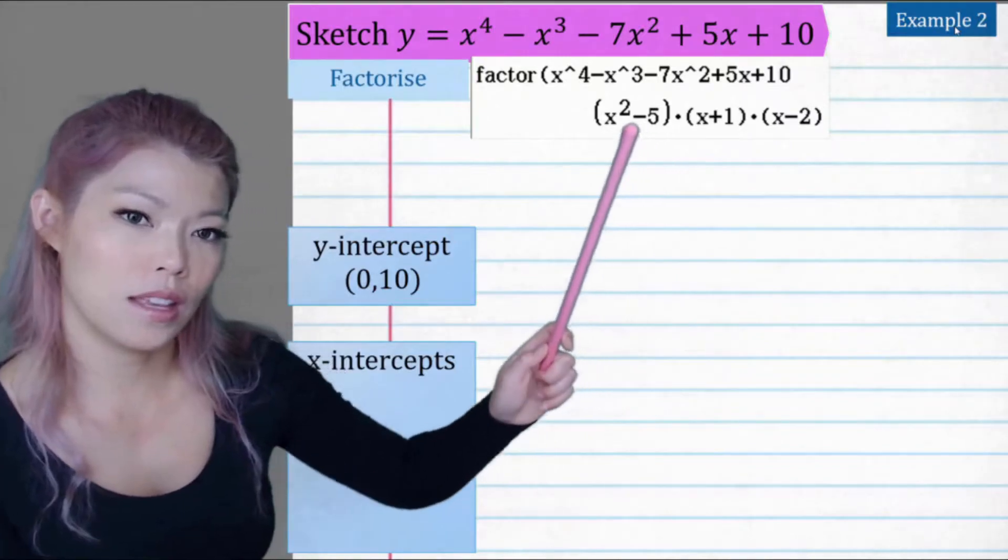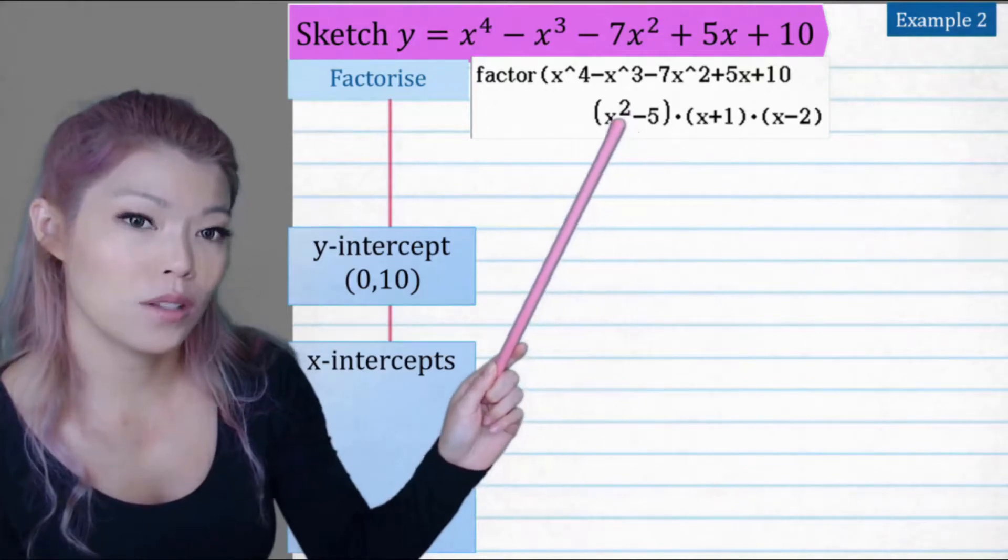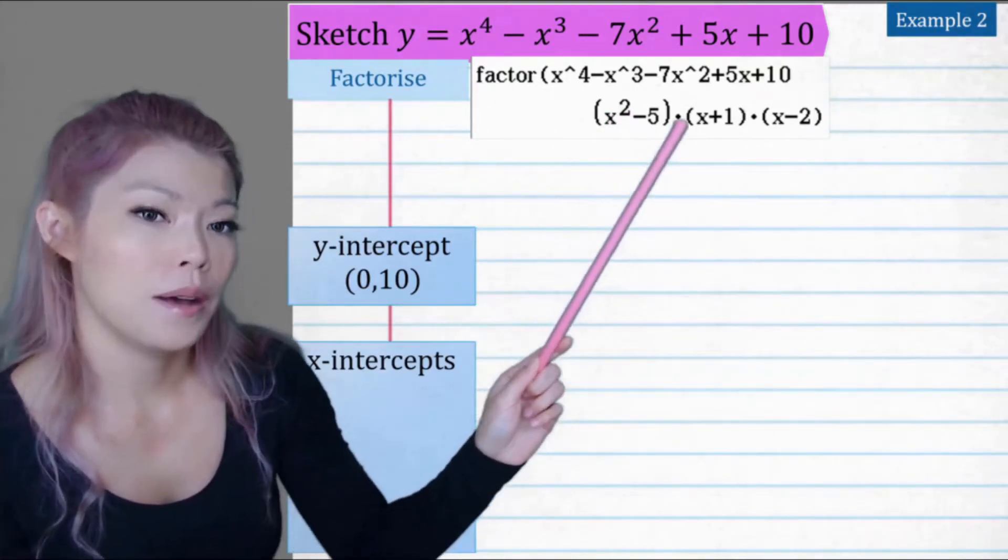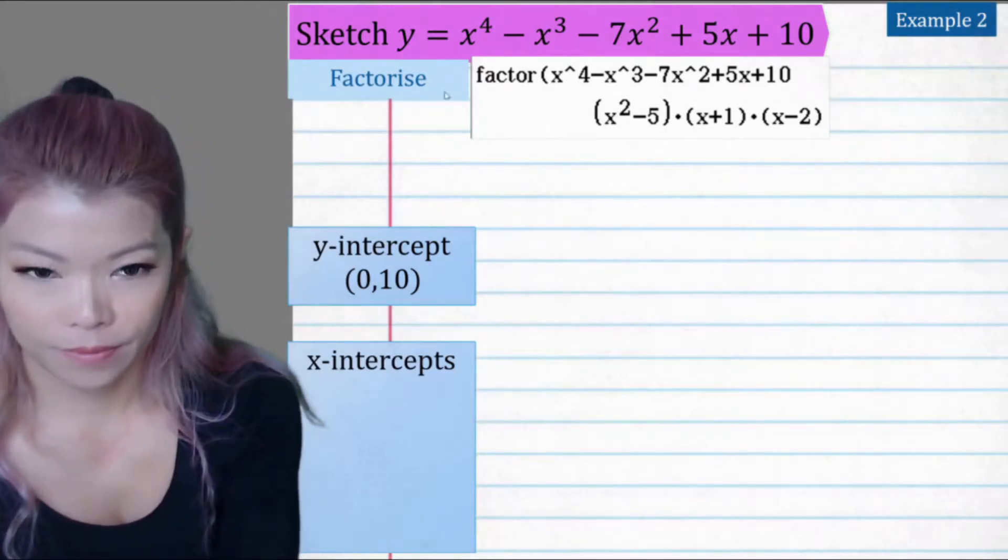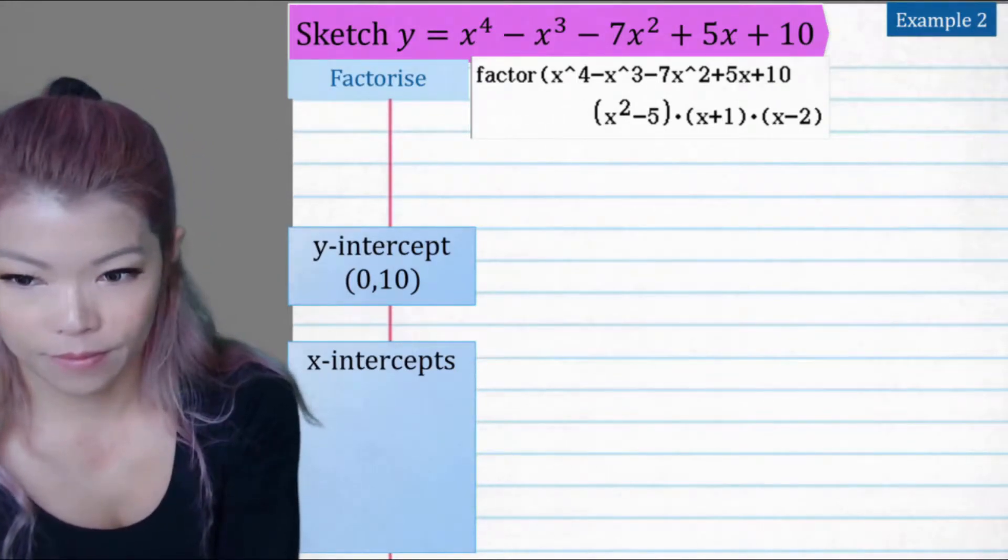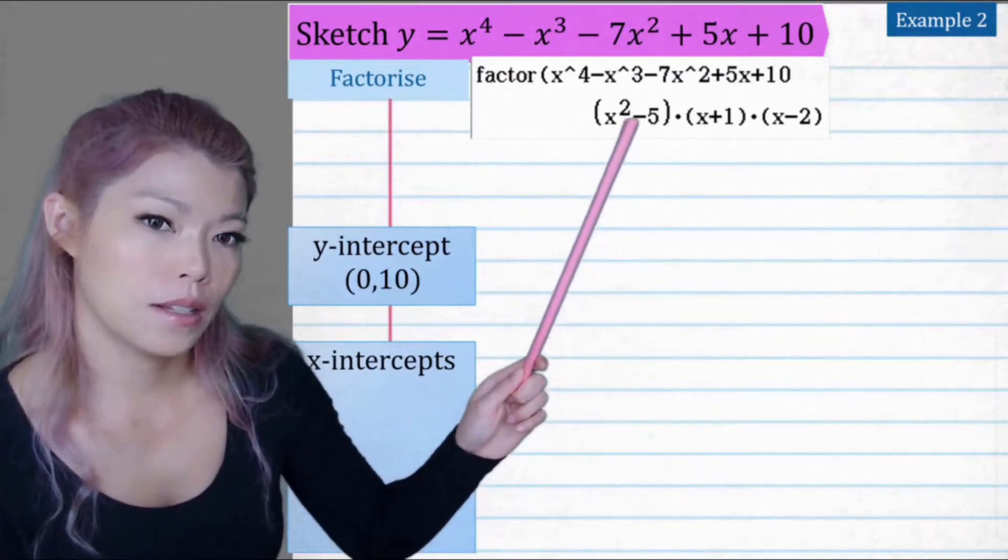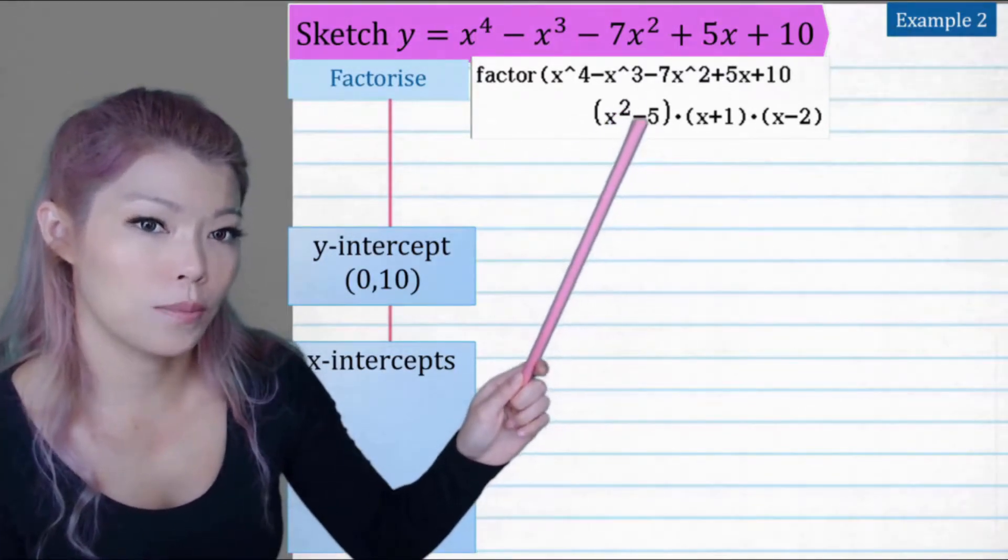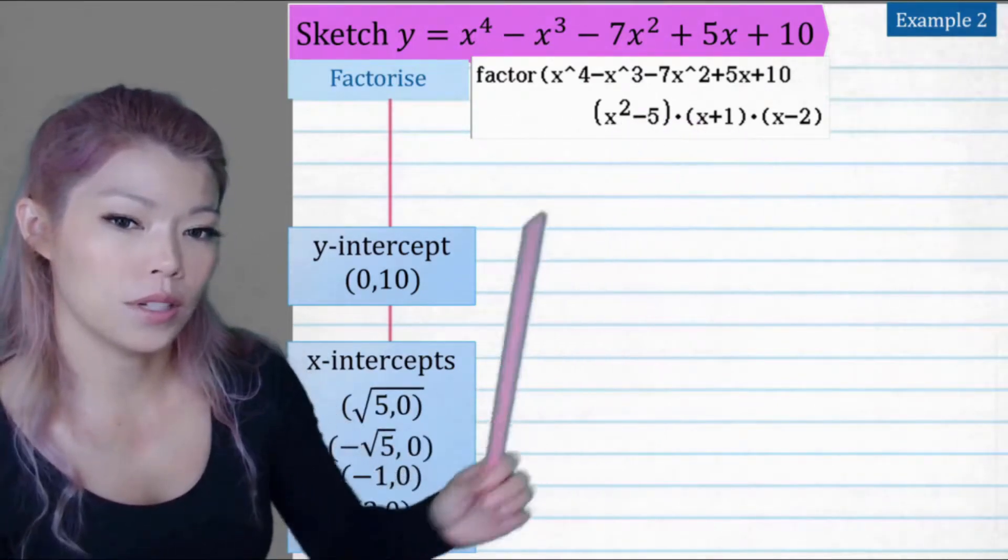And so the x intercepts is plus or minus difference of two squares, so plus or minus square root of 5, minus 1 and positive 2. So the intercepts are using difference of two squares is plus or minus square root of 5, and then minus 1 and positive 2.